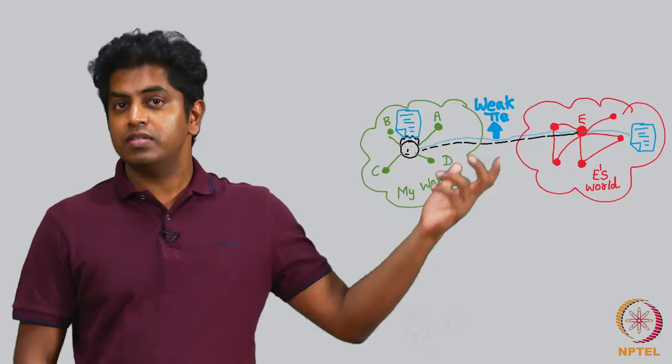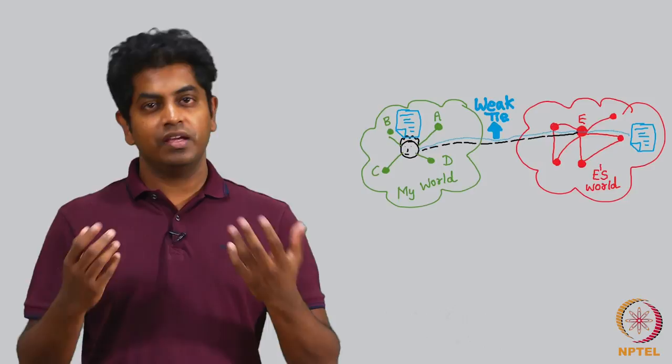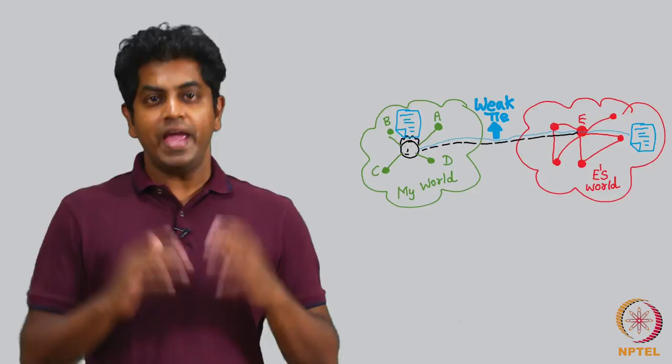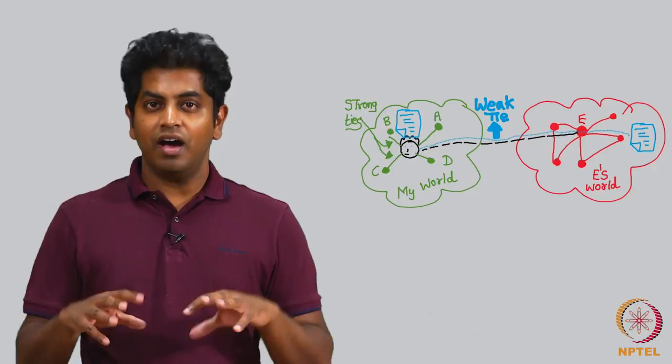Given that E is a distant friend of mine because he stays in a different world, he probably is a weaker of my friends. I call that a weak tie while A, B, C, D they are strong ties.